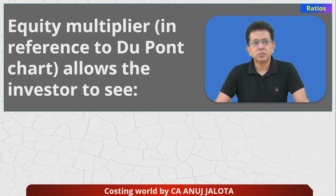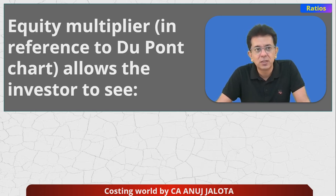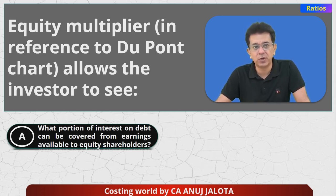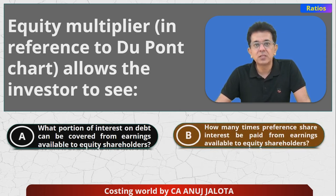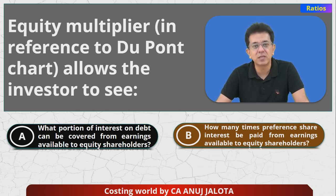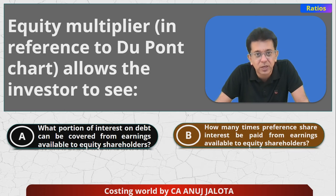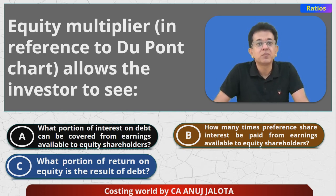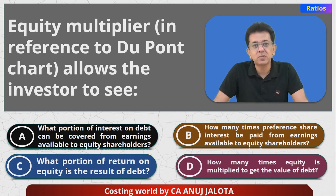Today's question is: Equity Multiplier in reference to the DuPont chart allows the investor to see — Option A: what portion of interest on debt can be covered from earnings available to equity shareholders; Option B: how many times preference share interest can be paid from earnings available to equity shareholders.